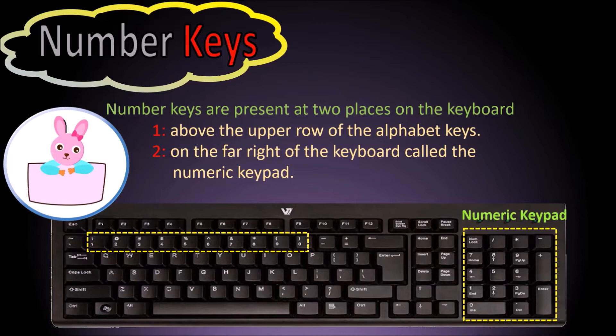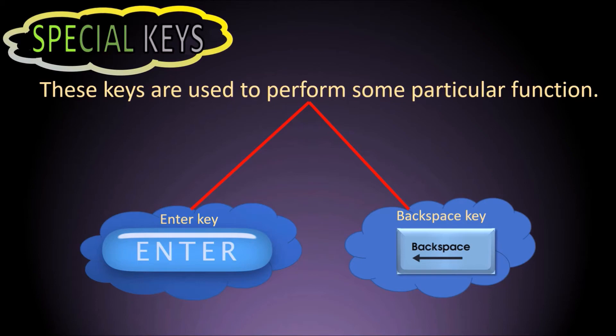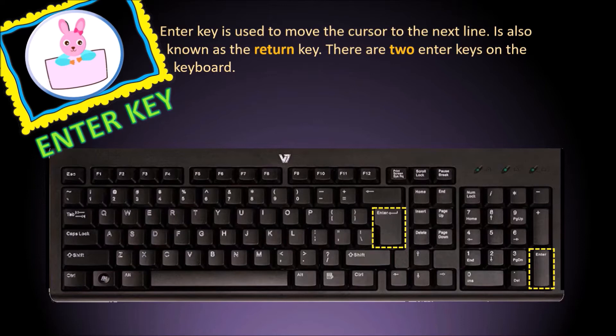The far right section is also called the numeric keypad. Special keys are used to perform particular functions, like the Enter key and Backspace key. The Enter key is used to move the cursor to the next line. It is also known as the Return key. There are two Enter keys on the keyboard.